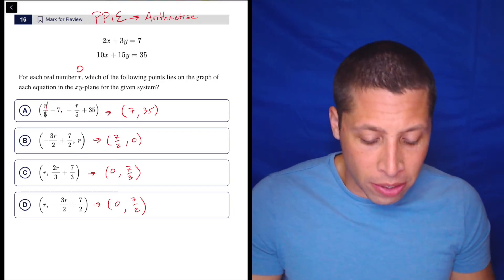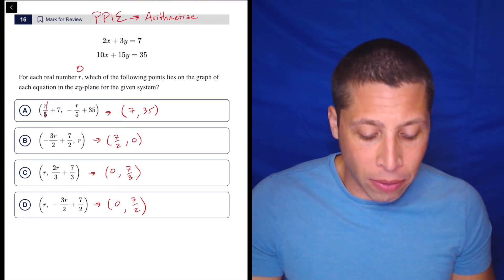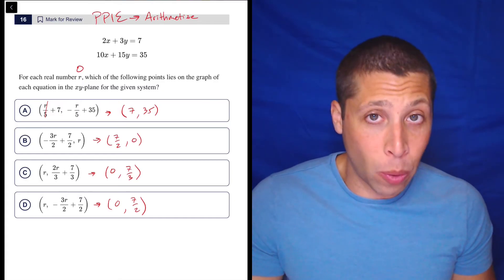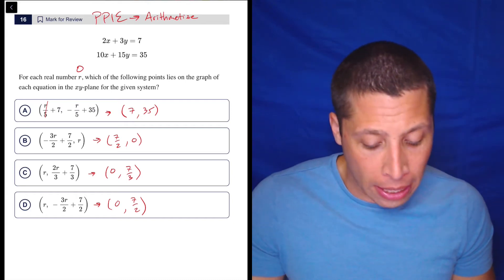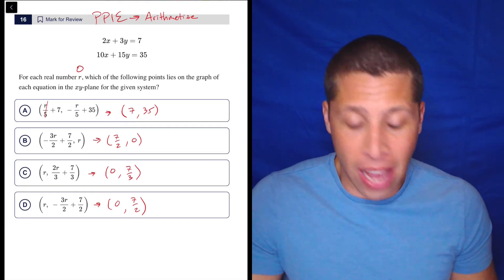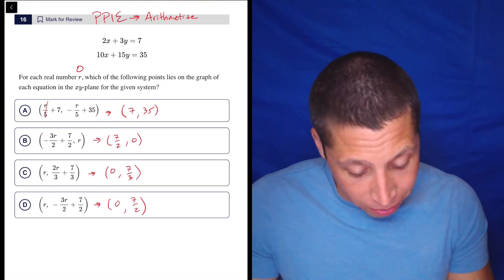The other thing to notice is these are both the same equation. If we took the top equation and multiplied everything by five, we would get the bottom equation. So there's no reason to do it in both. They're the same equation. I don't know why they did that.